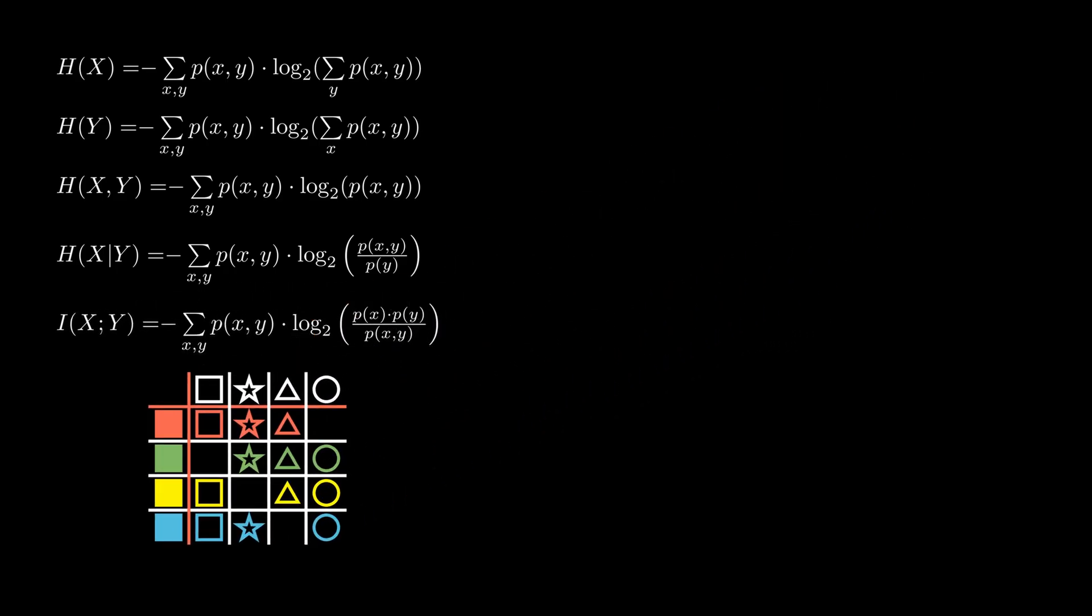There are also a few very important dependencies between the formulas for entropy. Joint entropy is always lesser or equal to the sum of individual entropies for both events. It is also equal to the uncertainty of one event increased by the uncertainty of the second one given that we know the first.